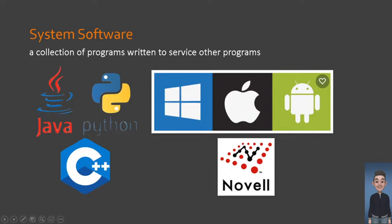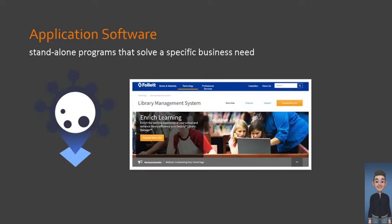The second type is what we call application software. It is standalone programs that solve a specific need. These types of software are aimed to speeding up transactions, recording, and processing information to suit specific business needs.